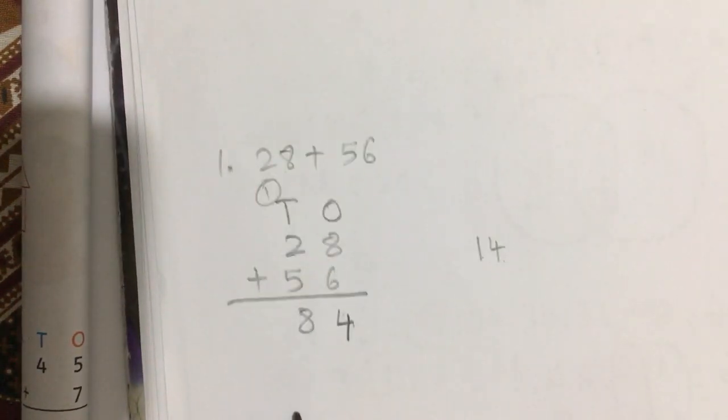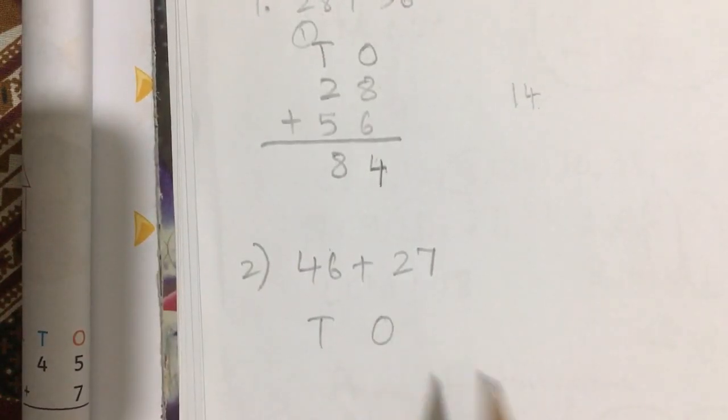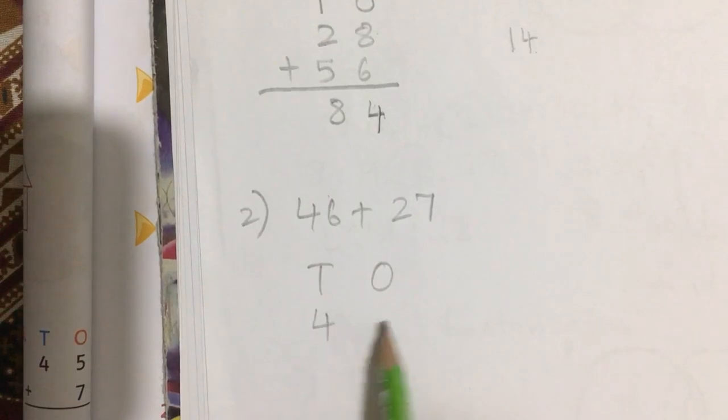46 plus 27. Isko bhi aap ne 10s or 1s ke through likhna hai - you have to write 46 plus 27 in 10s and 1s columns, and you have to add them.